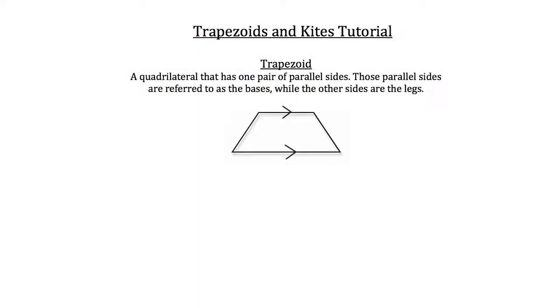A regular trapezoid, which is a quadrilateral that has one pair of parallel sides. Those parallel sides are referred to as the bases, while the other sides are the legs. So this side and this side are the bases, and this side and this side would be the legs.